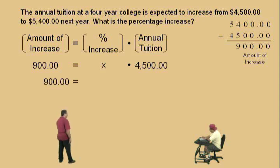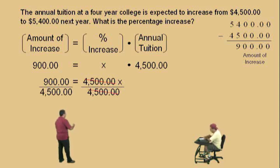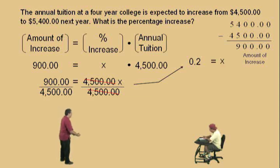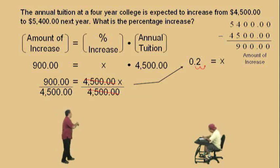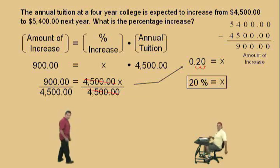So now we have our equation. Remember, x times 4,500 is the same as 4,500x. And how do we solve this, Charlie? Divide by 4,500. That's right. Those cancel. And now, what's the value of this quotient, Charlie? Use your calculator. 0.20. Very nice. And that's x. Now, remember, we're trying to find a percent. So how do we change a decimal to a percent, Charlie? Move right twice. Move it to the right two times. And notice, we have to put that zero as a placeholder. And so our answer is 20%. So it was a 20% increase, right? That's a lot.